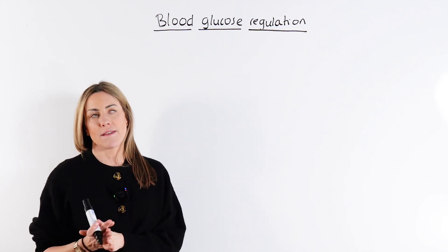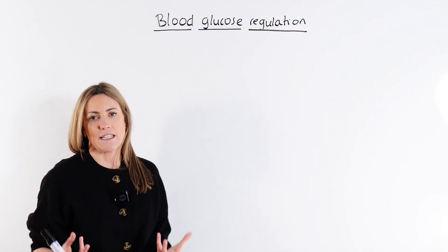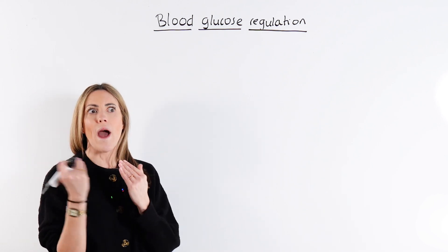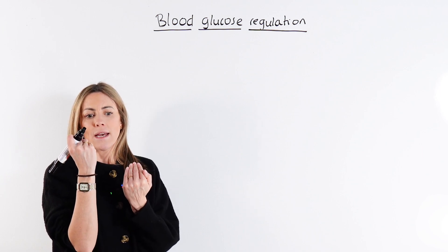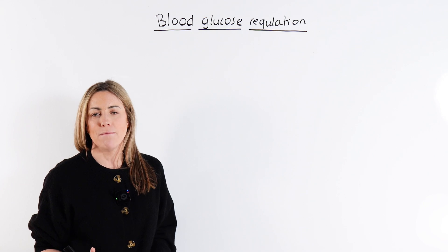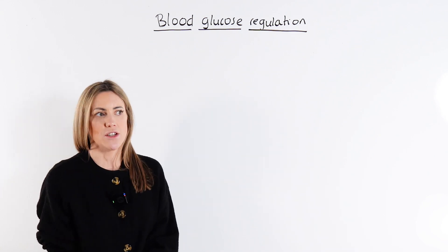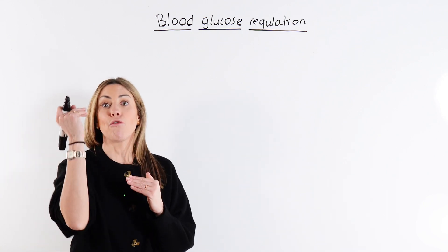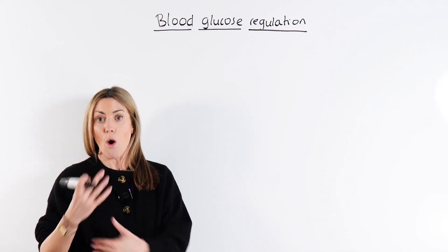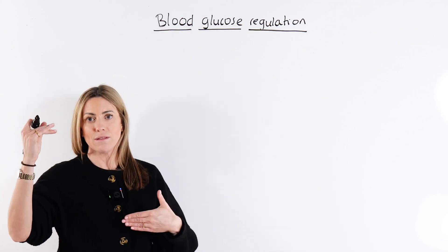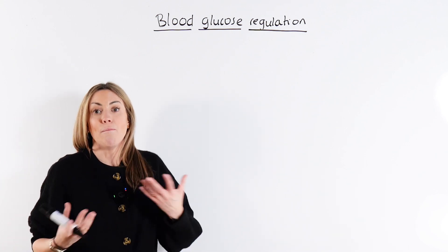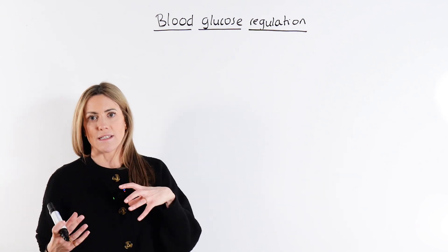Let's start with a definition of negative feedback. It's basically that idea that if there's any change away from the norm, it will cause a corrective mechanism to reverse that change. So, for example, if there's any increase or decrease in your blood glucose concentration away from that normal set point, it will initiate a corrective response or mechanism to reverse that change.